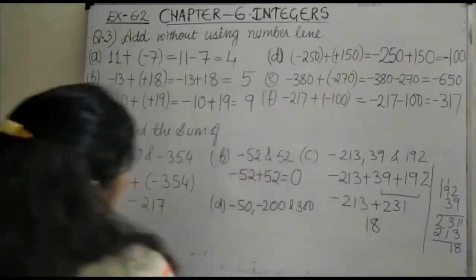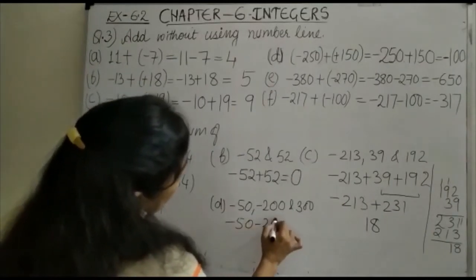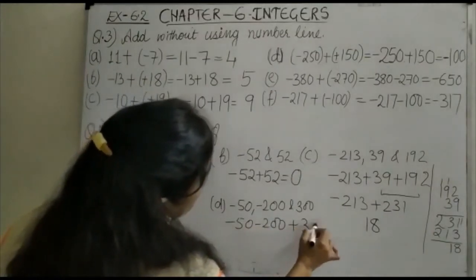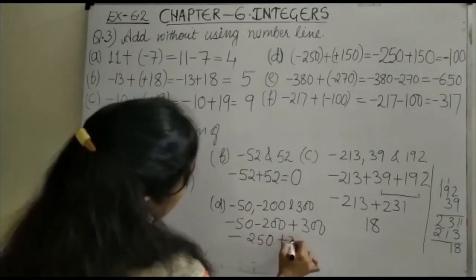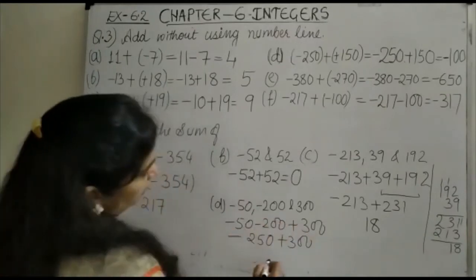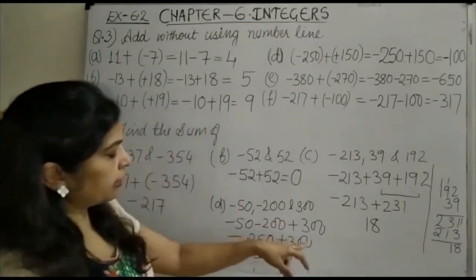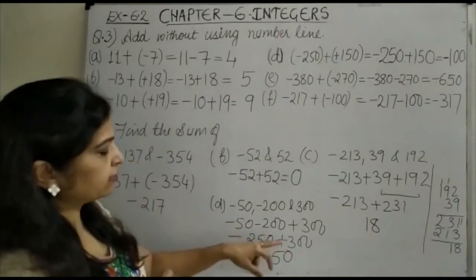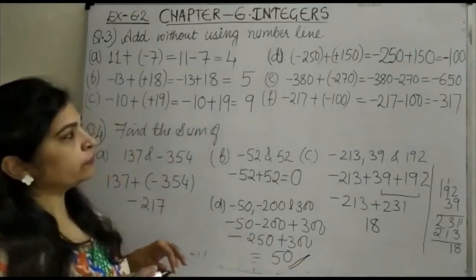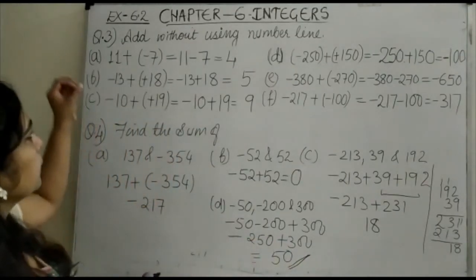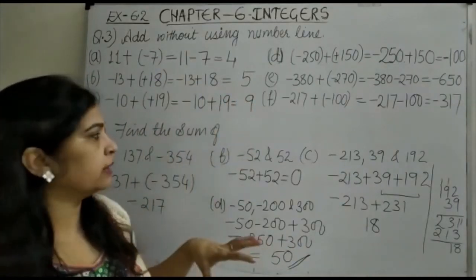Next, -50 + (-200) + 300. First combine the negatives: -50 + (-200) = -250. Then -250 + 300 = 50. The sign of the bigger number 300 is positive, so the answer is +50.